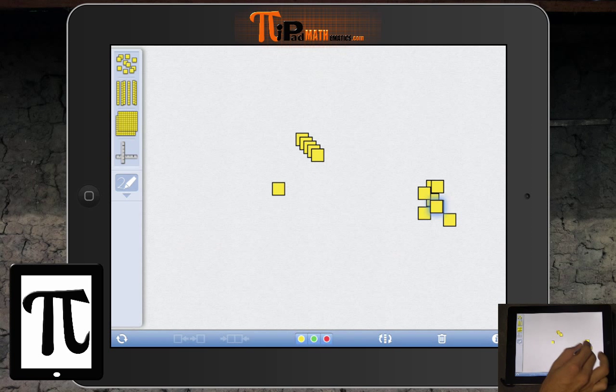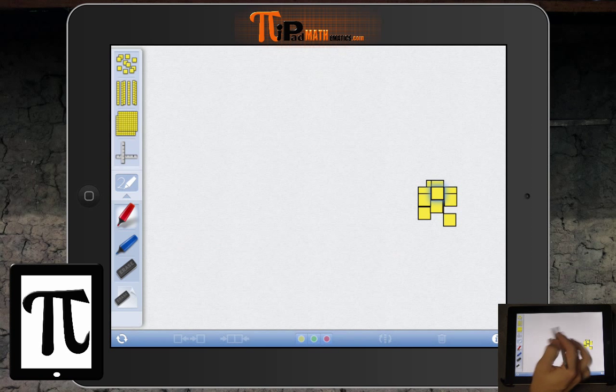9, 10, 11, 12, 13, 14, 15, 16. And so we can write on there that this equals 16 units, or the number 16.